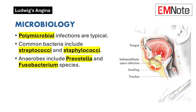Ludwig's angina is typically a polymicrobial infection involving anaerobic bacteria. Common pathogens include viridans streptococci, staphylococci, peptostreptococci, and anaerobes such as species of Prevotella, Porphyromonas, and Fusobacterium.